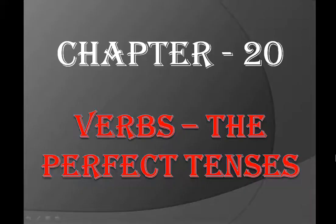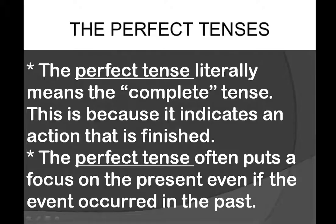Now the next chapter we will see: verbs and the perfect tense. The topic is the perfect tense. It means the complete tense — it gives a properly finished sentence. Because it indicates an action that is finished — that is the perfect tense. In this tense, it focuses on the present, even if it involves a past event.